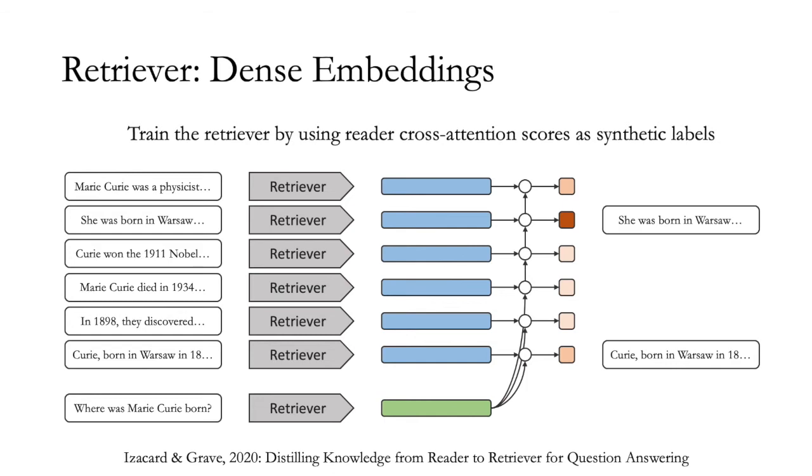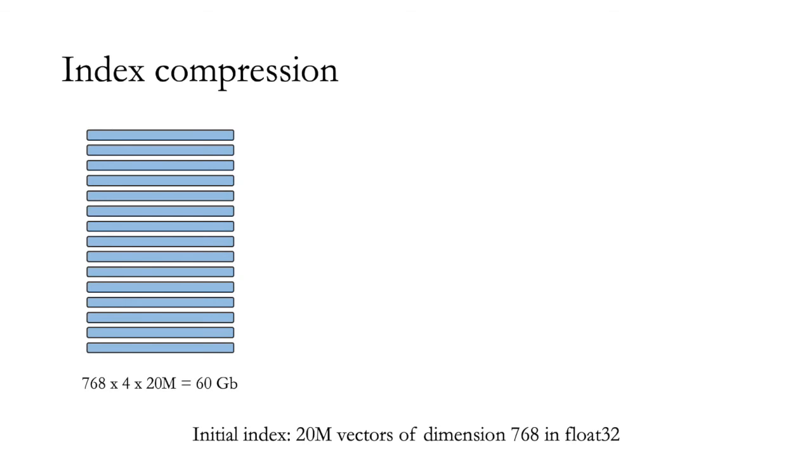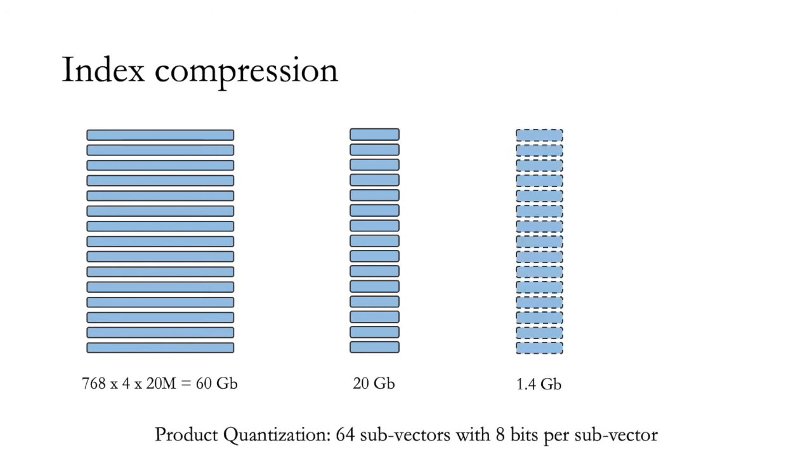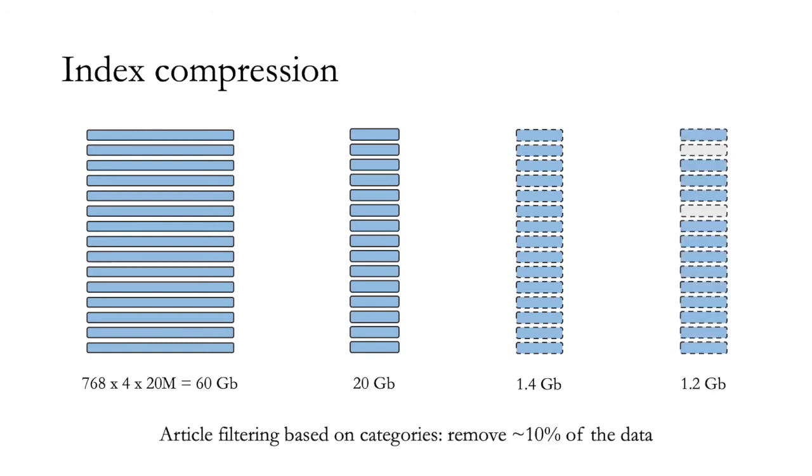Regarding the training of the retriever, we initialize the model with a BERT-based model and train following the scheme developed in our recent paper, distilling knowledge from reader to retriever for question answering, where we use the reader cross-attention score as synthetic labels to train the retriever. The problem is that the size of the pre-computed index is about 60 gigabytes. This simply comes from the fact that each of the 20 million passages is represented by a vector of dimension 768. To obtain an index of reasonable size, we first divide the dimension of each vector by 3. Then, we use product quantization with 64 subvectors with 8 bits per subvector. This gives one index of 1.4 gigabytes. We further remove about 10% of the data by filtering articles based on categories. The final index is about 1.2 gigabytes with minimal performance loss.